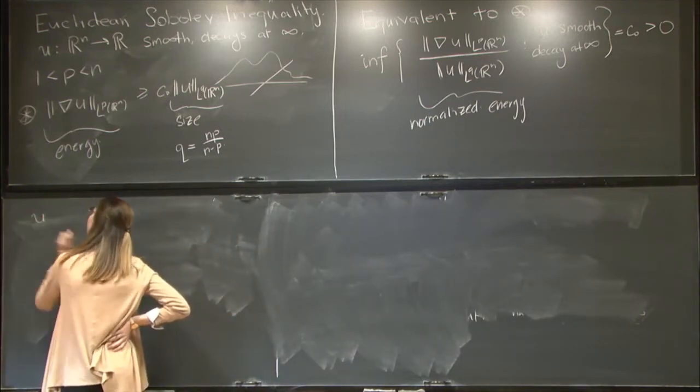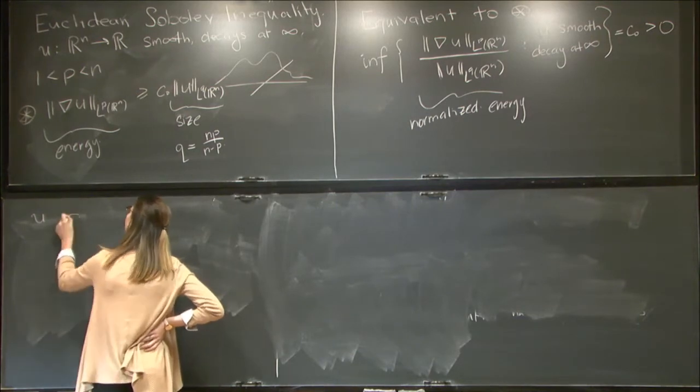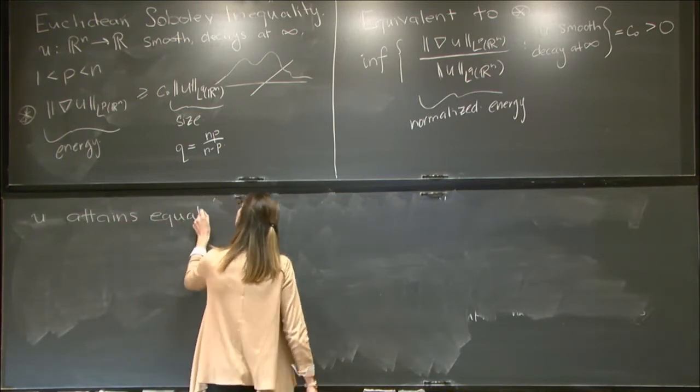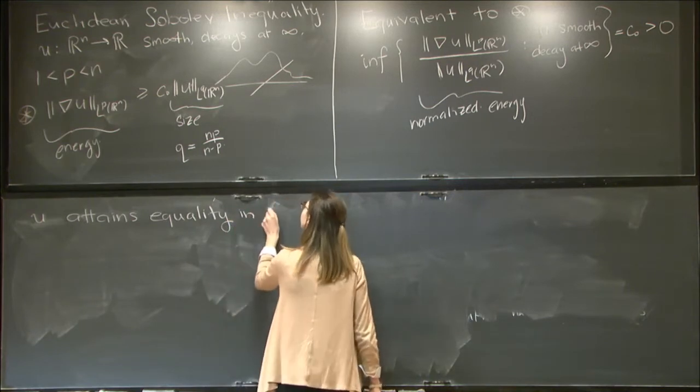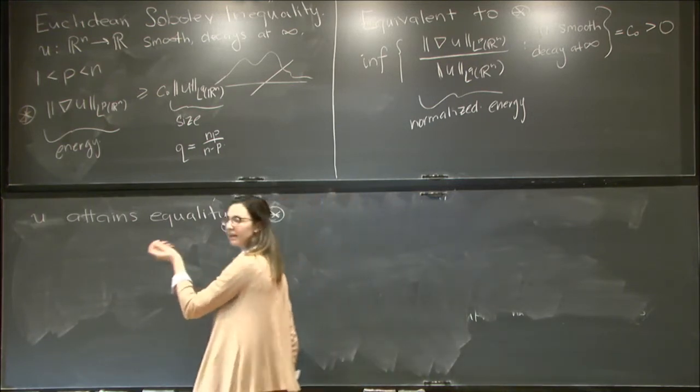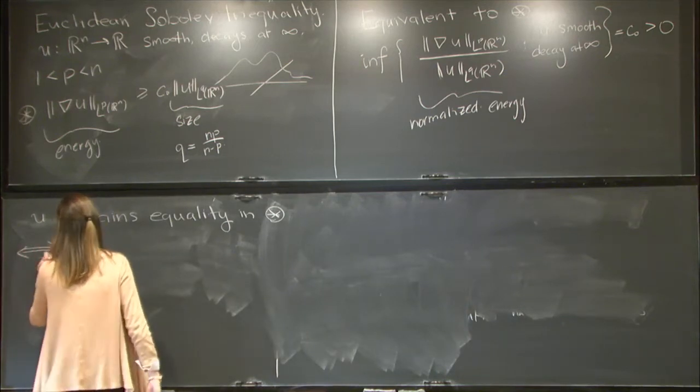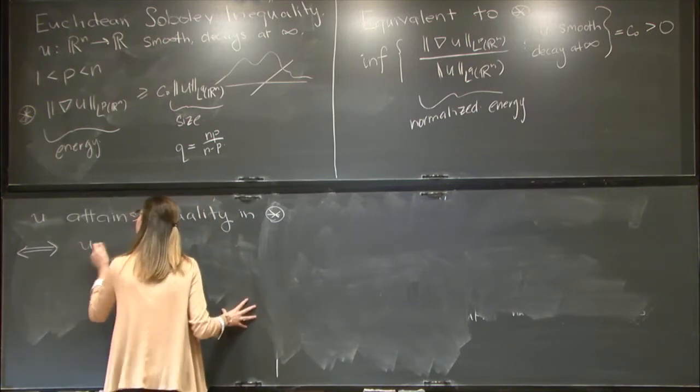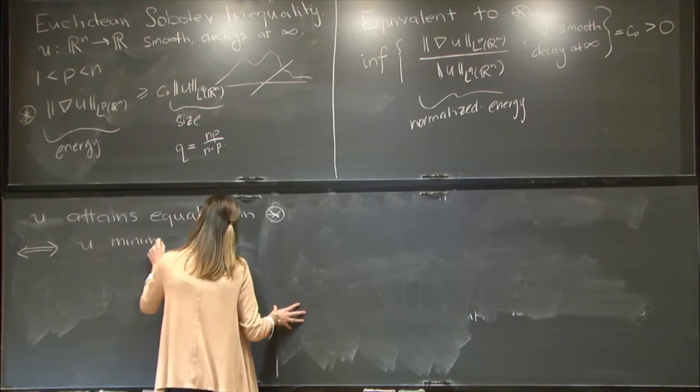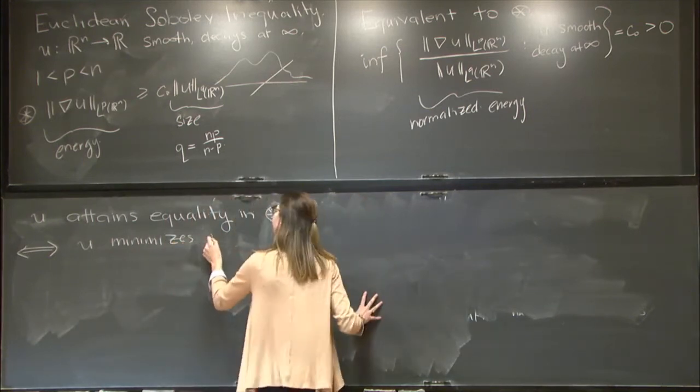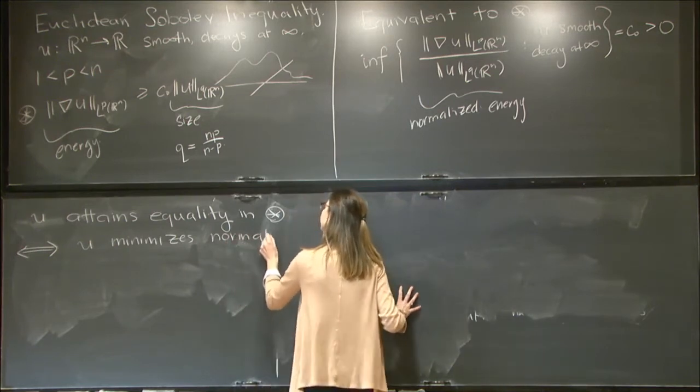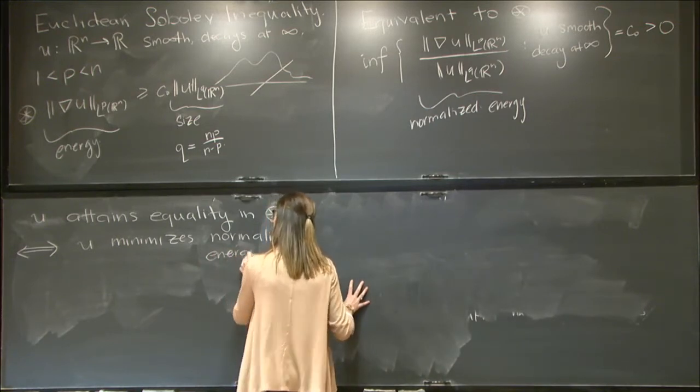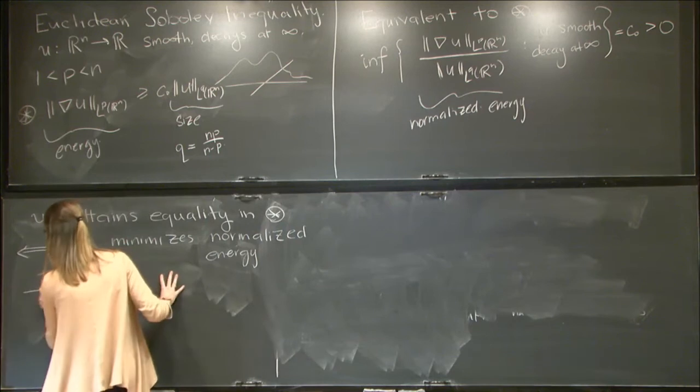A function u attains equality in the Sobolev inequality star if and only if—so first this is nothing about Sobolev inequality, just generally what I've said about this variational perspective—this is true if and only if u minimizes this normalized energy.